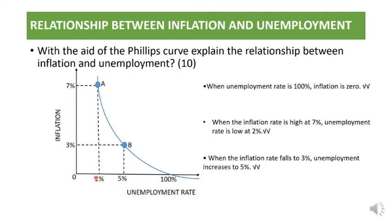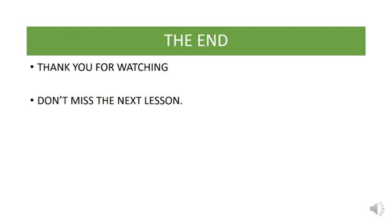You get six marks from explaining the relationship. Since the question says 'with the aid of the Phillips Curve,' you must draw it — drawing the Phillips Curve earns one mark. You also get a mark for labeling any one of the points, another mark for drawing and labeling the vertical axis, and another for drawing and labeling the horizontal axis. Thank you for watching and don't miss the next lesson.